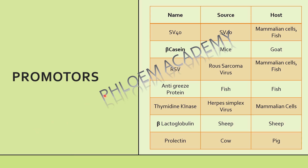Before going to the main promoters — their source and where they can be used — we must know what promoters are. Promoters are the site where initially your RNA polymerase will bind. RNA polymerase will bind on a promoter, and then only transcription will start. The second main thing about promoters is they define the level of transcription. These are the two main basic functions of promoters.